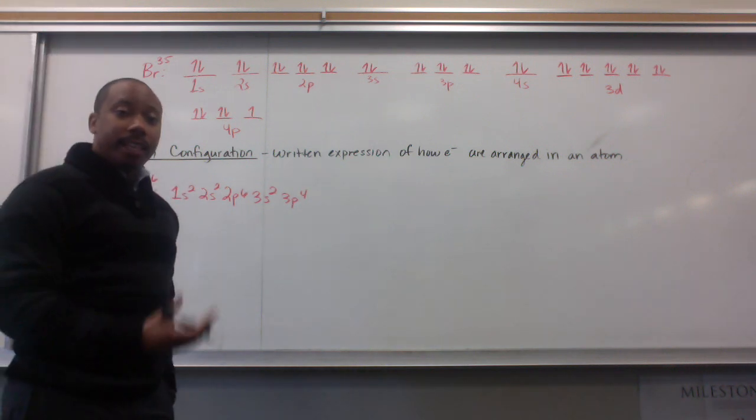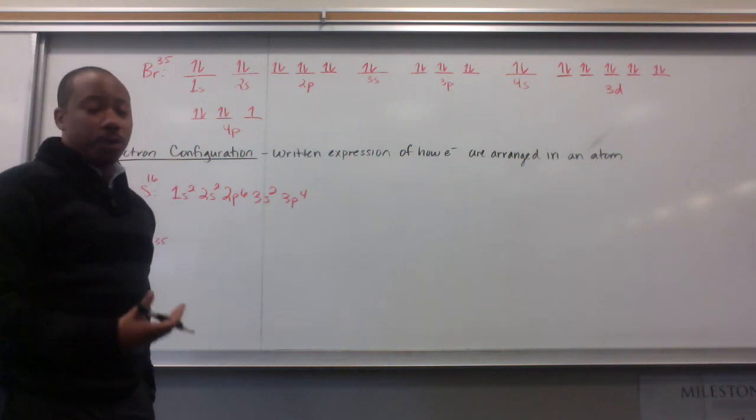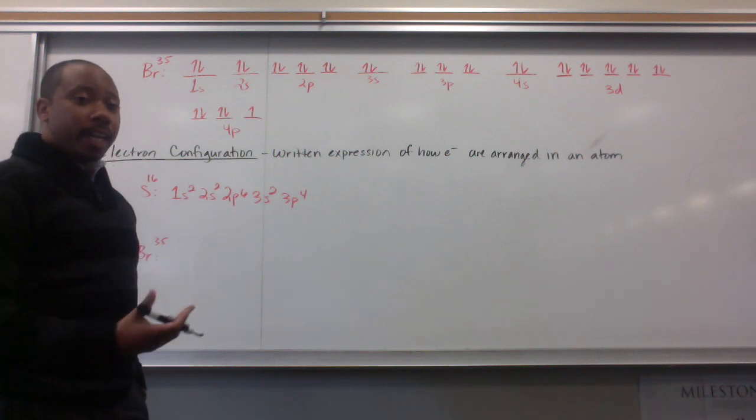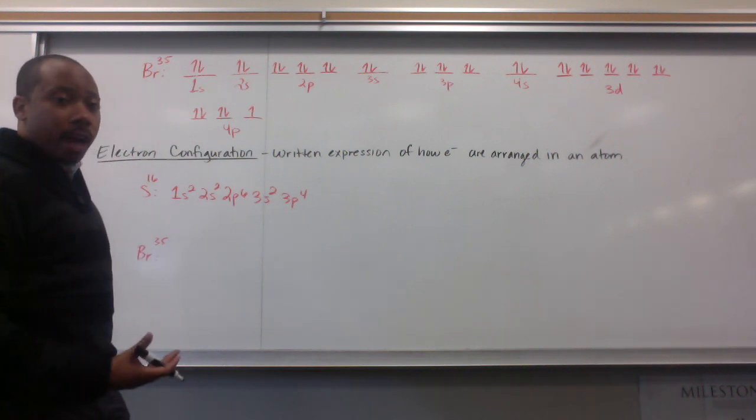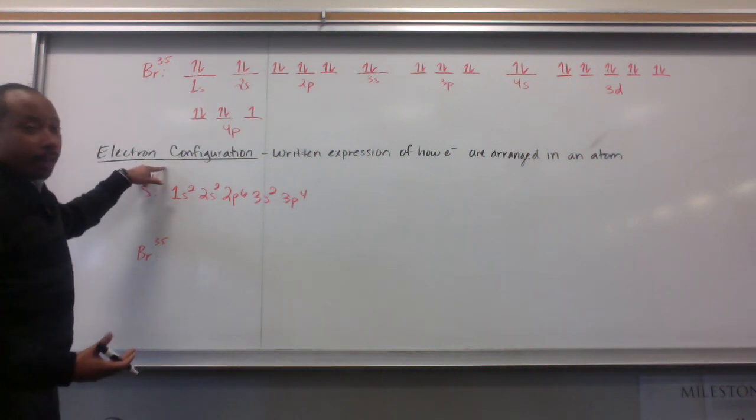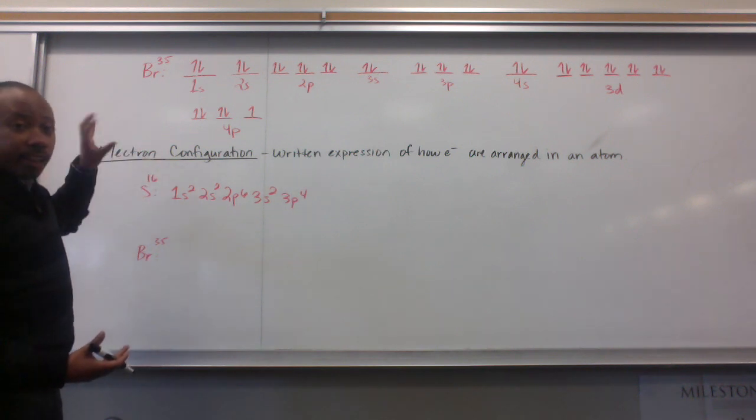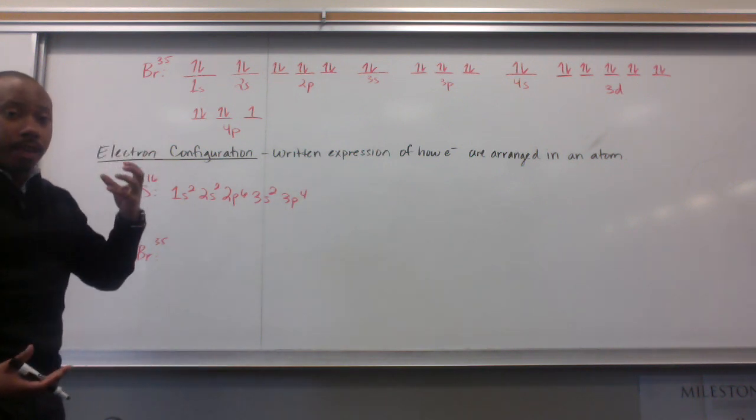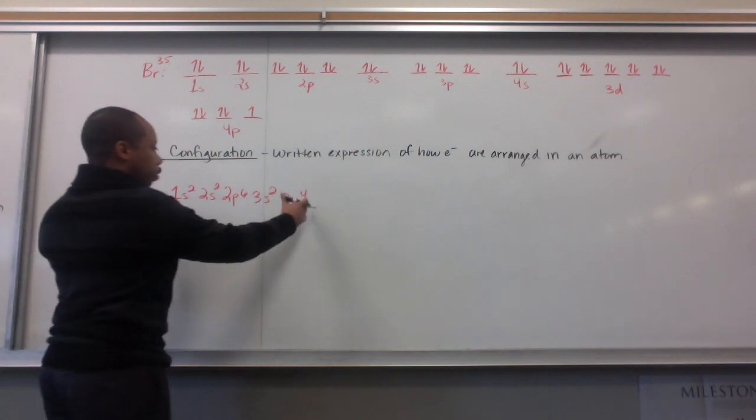Now, it can be tedious to draw these orbital diagrams over and over again. So, we've created a written expression for orbital diagrams called electron configuration. This is just taking the orbital diagram, or taking the knowledge of that, and putting it in a much smaller space.